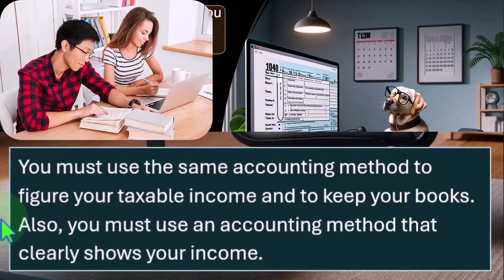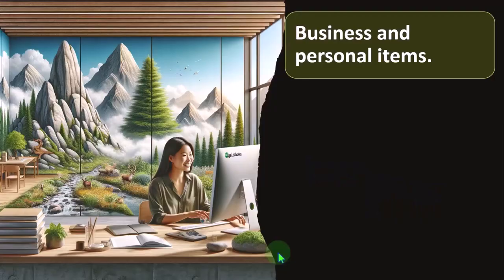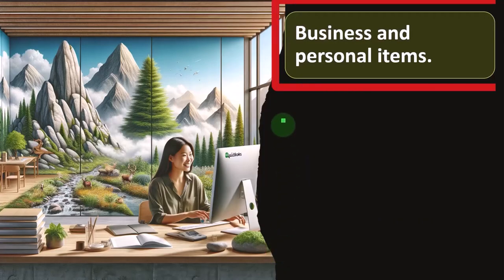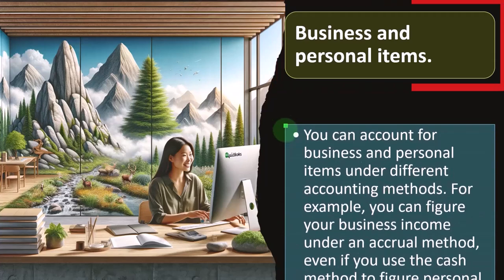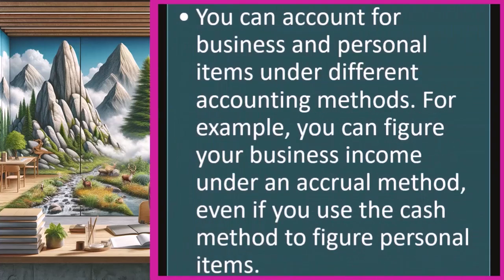So also, you must use an accounting method that clearly shows your income. Obviously it needs to be accurate in terms of showing your income, business and personal items. So you can account for business and personal items under different accounting methods. For example, you can figure your business income under an accrual method even if you use the cash method to figure your personal items. So you might be saying, I've got a small business.